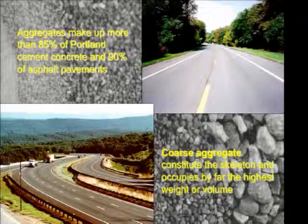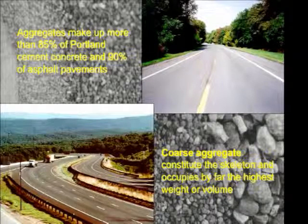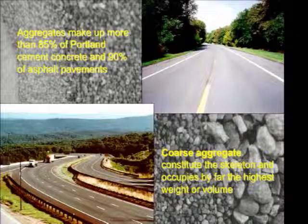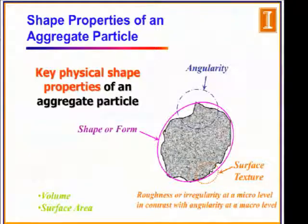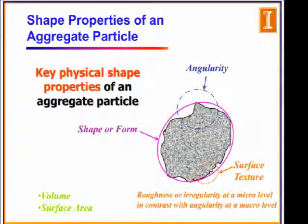A major part of flexible and rigid pavements is unbound or aggregate material. More than 85 percent of cement concrete and almost more than 90 percent of asphalt concrete is unbound material. Understanding the behavior and properties of this material is really important since it significantly affects performance. One of the key properties of unbound material is its shape properties. There are key physical shape properties of an aggregate that influence performance, including angularity, surface texture, and shape or form.